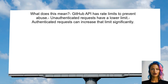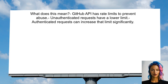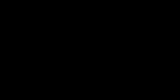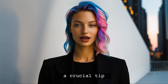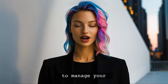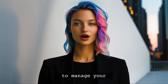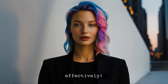So what does this mean? The GitHub API has rate limits to prevent abuse and ensure fair usage. Unauthenticated requests have a lower limit, but authenticated requests can increase that limit significantly. Understanding this is key to solving your issue. Stick around — at the end of this video, I'll share a crucial tip that can help you manage your API requests more effectively.